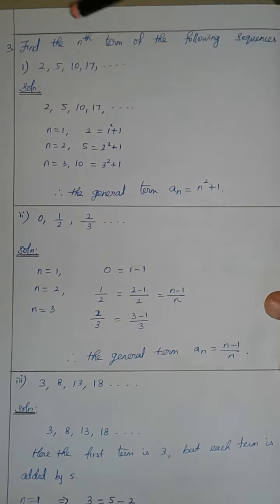The third term is 10. The fourth term is 4 squared, which is 16, and 16 plus 1 equals 17. So the pattern is n squared plus 1.